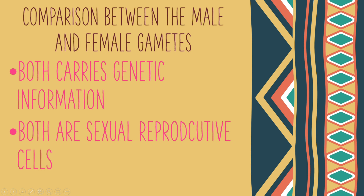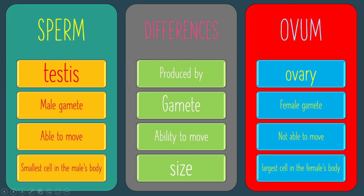The sperm and the ovum have some similarities and some differences. Both carry genetic information and both are reproductive cells. However, they differ in a few aspects: the sperm is shaped like a tadpole while the ovum is spherical. The sperm is produced by the testes while the ovum is produced by the ovaries. Sperms are able to move while the ovum cannot move by itself. The sperm can exist for about three to four days while the ovum can only exist for one to two days. The sperm is the smallest cell in the male's body while the ovum is the largest cell in the female's body.